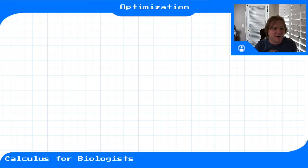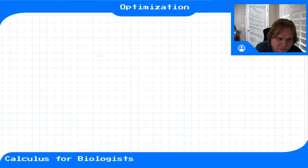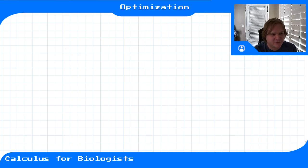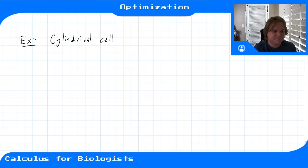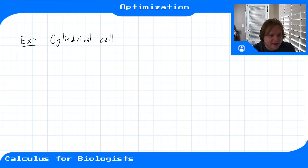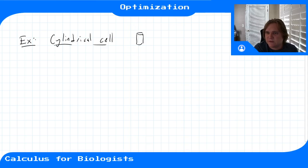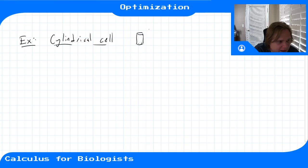In this video we'll do another example — an optimization problem with a constraint, and that's going to change the way we solve it. For this problem, we have a cylindrical cell. Not all cells are perfectly spherical; some are disc-shaped, cylindrical, or star-shaped like an astrocyte. So we'll have a cylindrical cell that looks something like this.